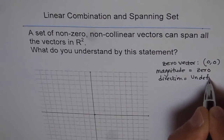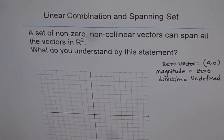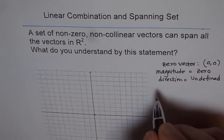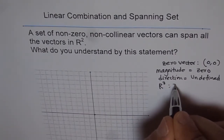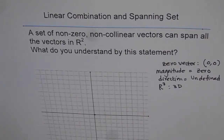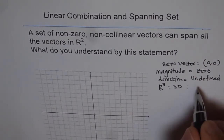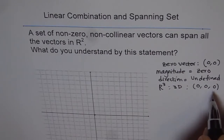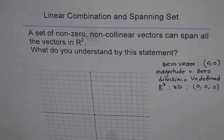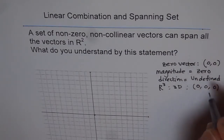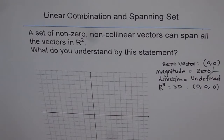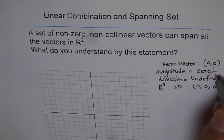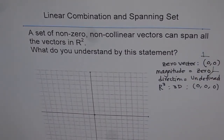Can you give me the zero vector in R3? R3 means three dimensions — the XYZ components belonging to a 3D space. There, the zero vector will be (0, 0, 0), having three components all zero, representing the origin in R3.